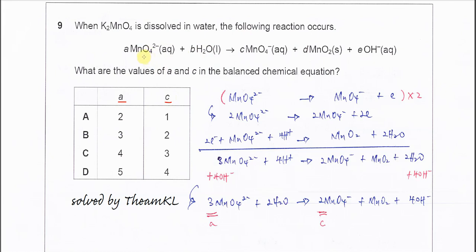For the first half-equation, take this pair. MnO₄²⁻ forms Mn⁴⁻. The elements are all balanced — it's just the charge that is not balanced. Here is two negative, here is negative, so you need to add one electron. This is the balanced first half-equation.